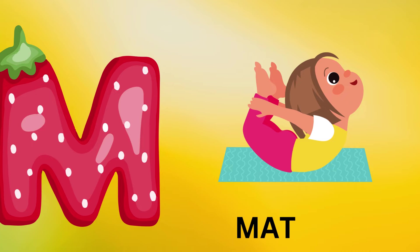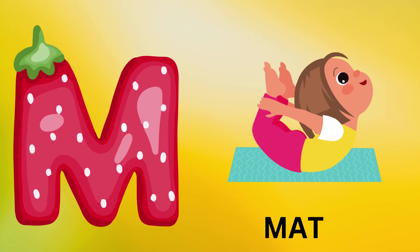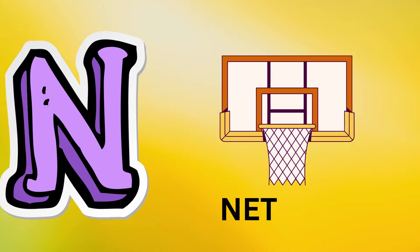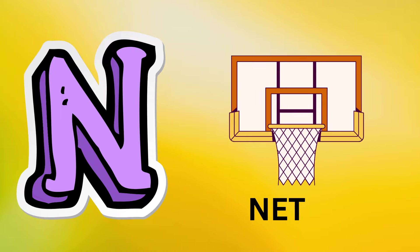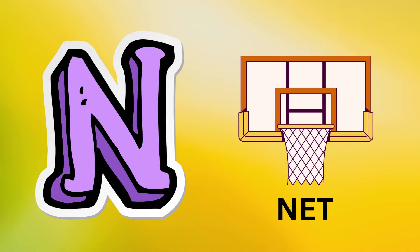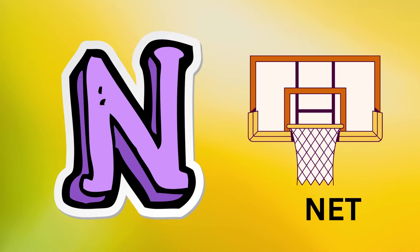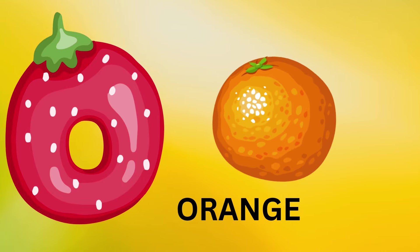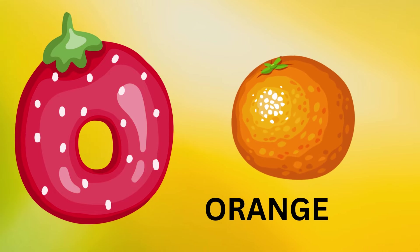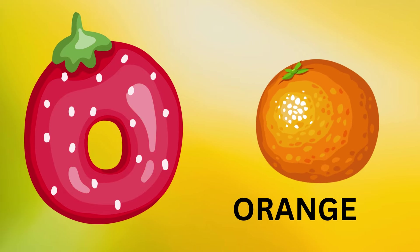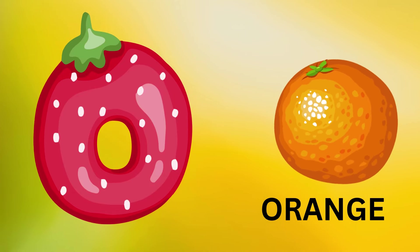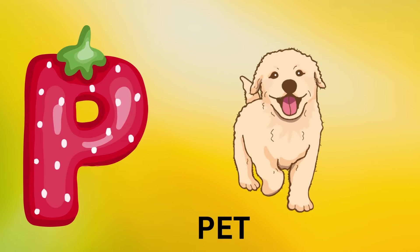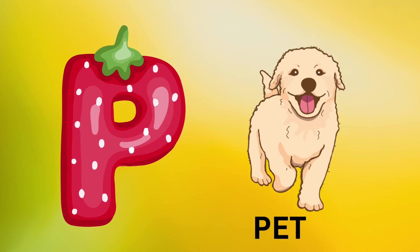M is for mat, m-m-mat. N is for net, n-n-net. O is for orange, o-o-orange. P is for pet, p-p-pet.